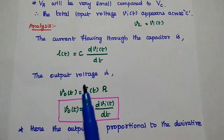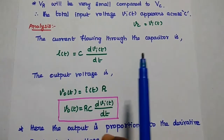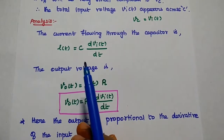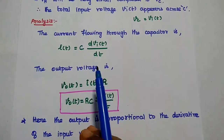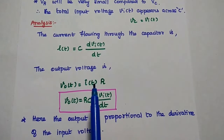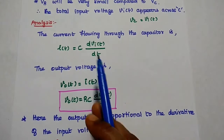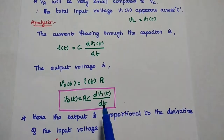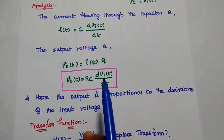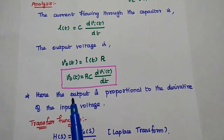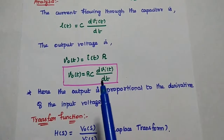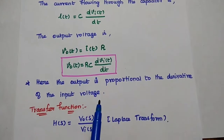Next, we are going to analyze the circuit by considering the current flowing through the capacitor. In general, the current flowing through the capacitor I of T is equal to C into dVi of T by dt. Then the output voltage, according to Ohm's law, V is equal to I into R. Here I of T is replaced with the value C into dVi of T by dt. Then we can get the output voltage V0 of T is equal to RC into dVi of T by dt. So the output voltage is proportional to the derivative of the input voltage. That is known as the differentiator.